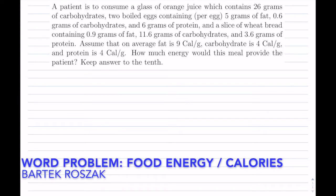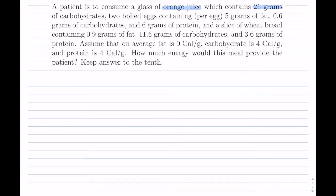A patient is to consume a glass of orange juice which contains 26 grams of carbohydrates. That is our first piece of information. Two boiled eggs — and this is per egg — that is our second piece of information: 5 grams of fat, 0.6 grams of carbohydrate, and 6 grams of protein. And then a slice of wheat bread, with its fat, carbohydrate, and protein information.